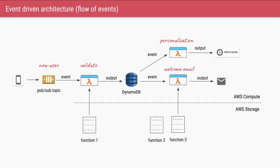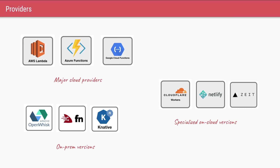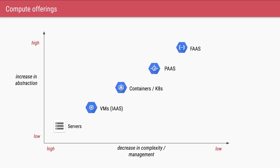We saw two providers offering function-as-a-service: AWS Lambda and Google Cloud Functions. Looking at the full spectrum of compute offerings: at the bottom left are physical servers, then cloud VMs (Infrastructure-as-a-Service), then containers/Kubernetes (Container-as-a-Service / Platform-as-a-Service) providing higher abstraction, and at the top is Function-as-a-Service. When creating a new application, first consider whether you can use an event-driven architecture with FaaS; if not, try Platform-as-a-Service; only then fall back to containers and VMs.